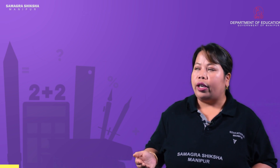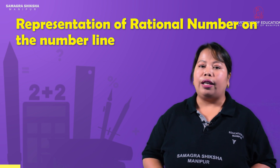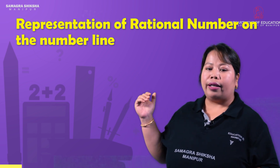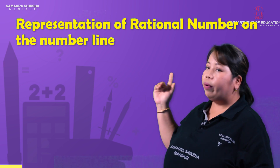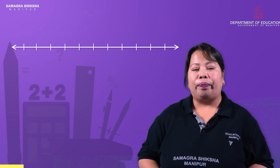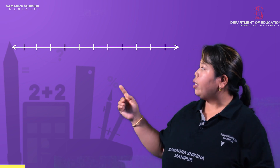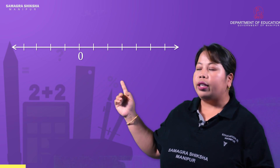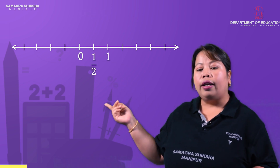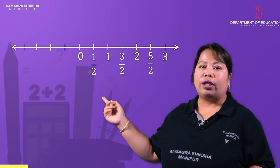We should use the representation of the rational number on the number line. How can we represent the rational number on the number line? If you have a calibrated scale, we can place rational numbers. Starting from 0, we have 1/2, then 1, then 3/2, then 2, then 5/2, then 3.